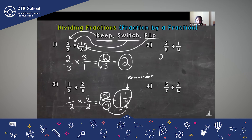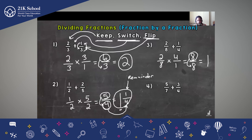Number three: Keep two eighths, Switch, and Flip. Now we go straight across: two times four is eight, eight times one is eight. So we get eight eighths. And whenever you have the same number on top as the denominator, it's actually one whole. Eight divided by eight — we get one whole.